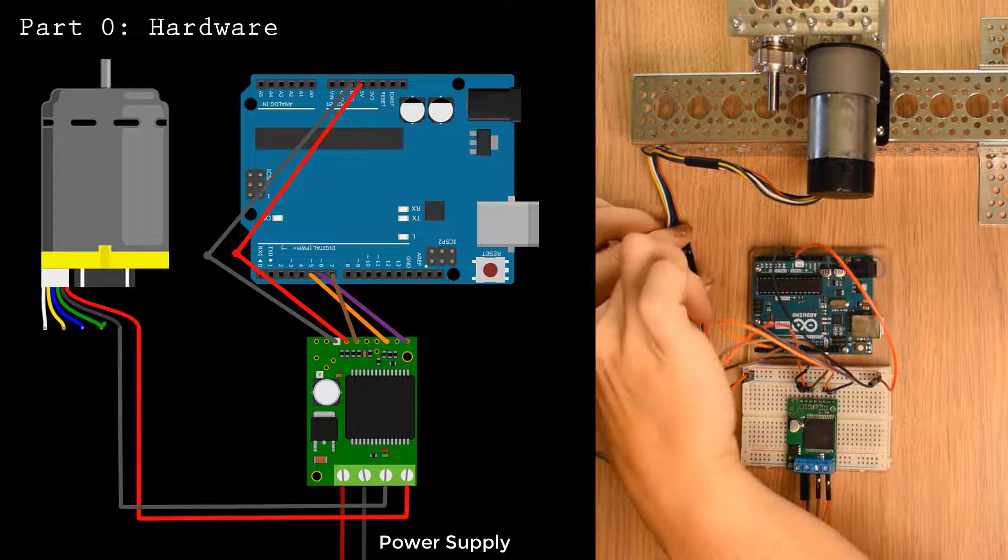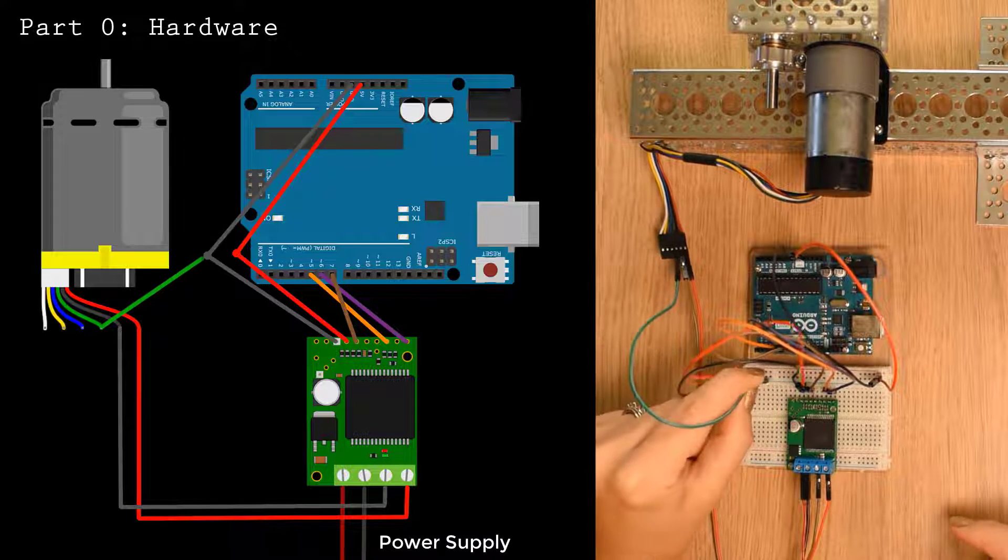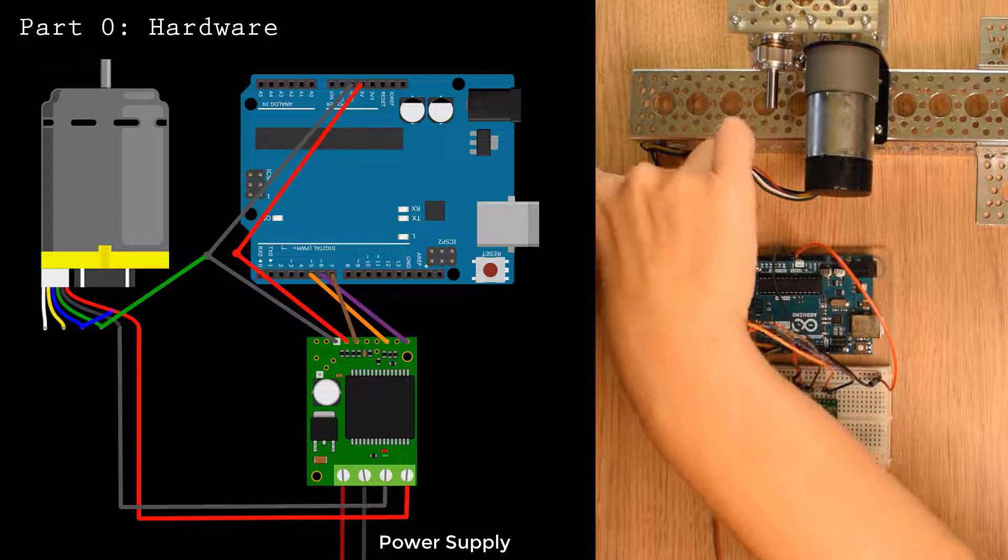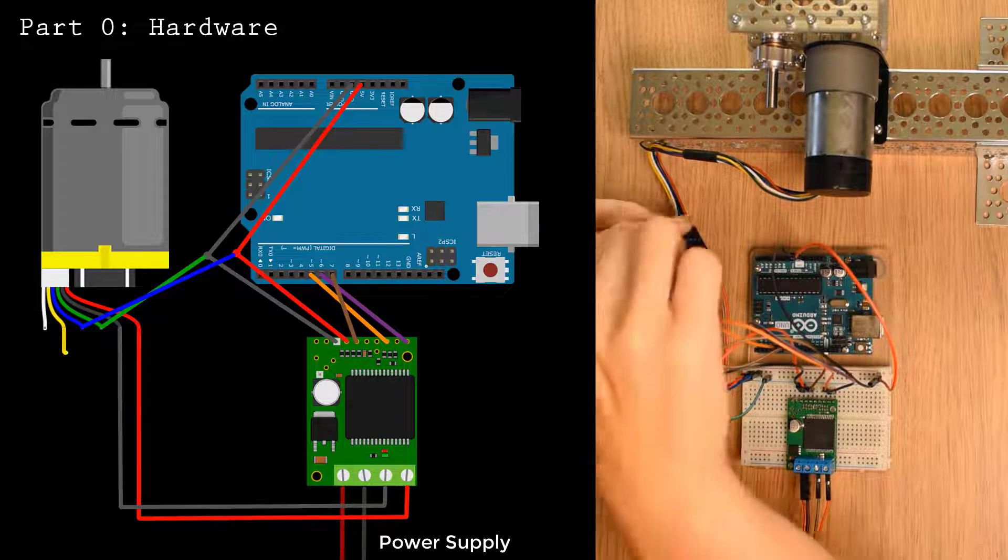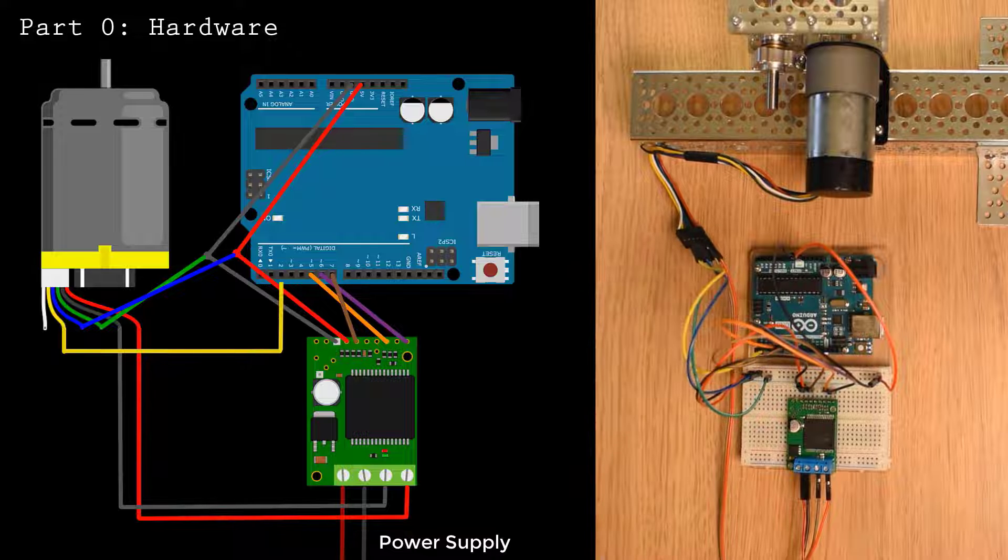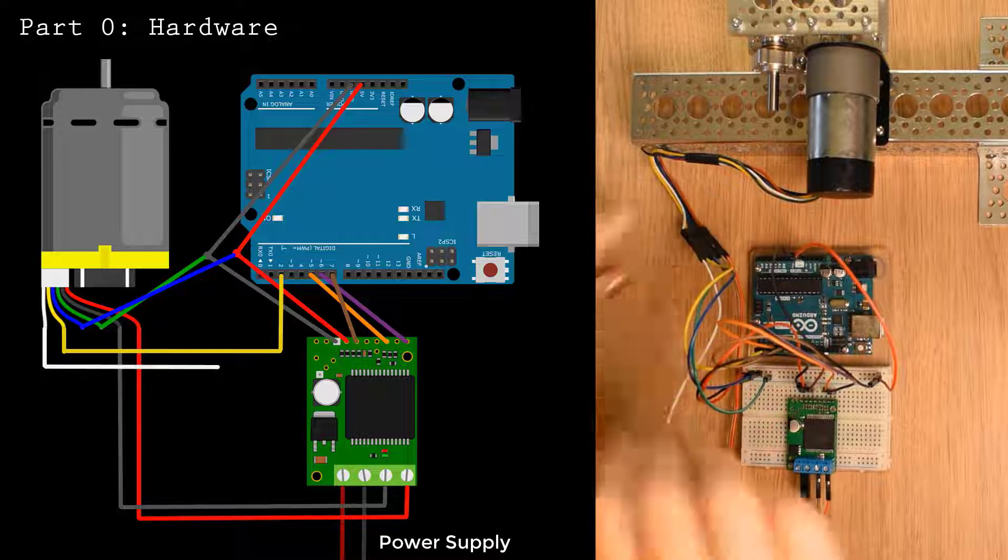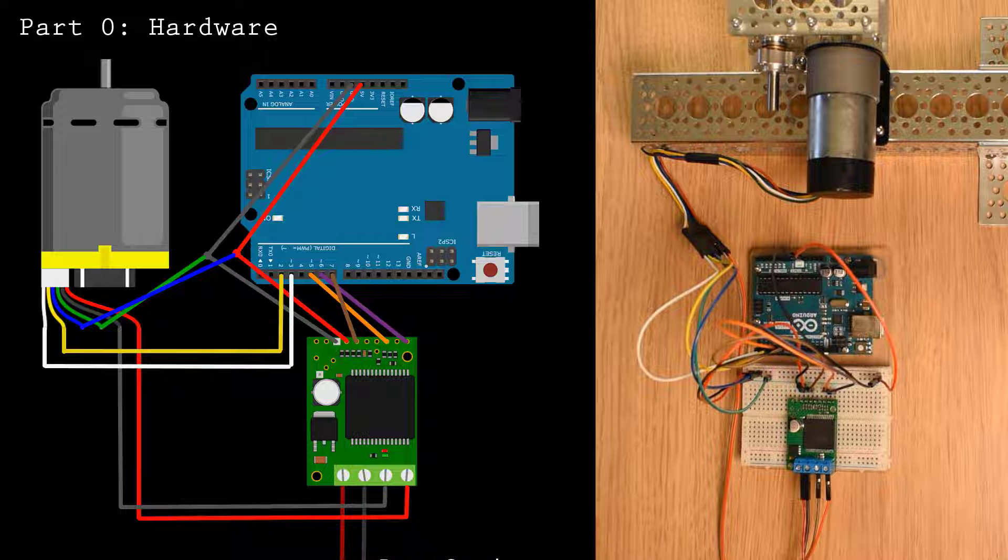For precise speed control, you also need a way to measure the position of the motor shaft. Here I'm connecting the magnetic encoder attached to my Pololu motor. For a more detailed walkthrough of these connections, watch our video on DC motor position control.